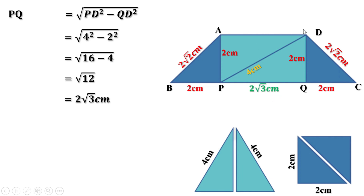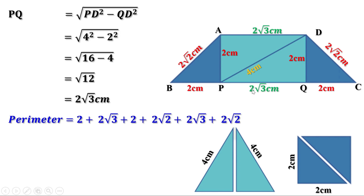PQ and AD are equal, therefore AD is also 2 root 3 centimeters. Now let us find the perimeter of the trapezium. Perimeter means the sum of all four sides. Side BC equals 2 plus 2 root 3 plus 2. This side is 2 root 2 centimeters, this is 2 root 3 centimeters, and this is 2 root 2 centimeters. Therefore the perimeter equals 2 plus 2 root 3 plus 2 plus 2 root 2 plus 2 root 3 plus 2 root 2.